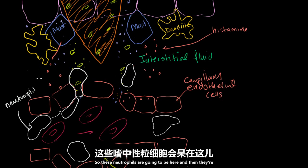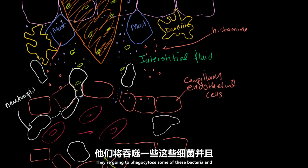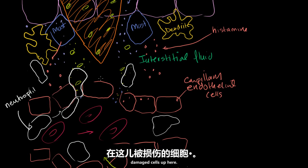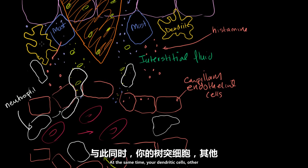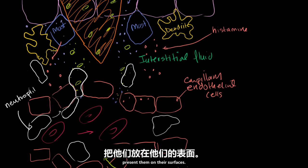These neutrophils are going to do what they do — they're going to phagocytose some of these bacteria and start eating up maybe even some damaged cells. That's what you want to happen — that's why this is the field of battle. At the same time, your dendritic cells and other phagocytes will eat up the viruses and then present them on their surfaces.